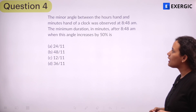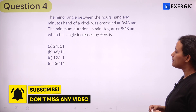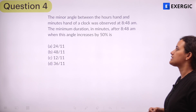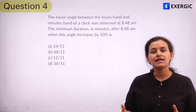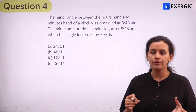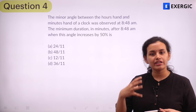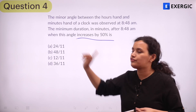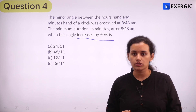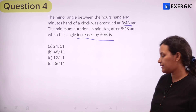The minor angle between the hour hand and minute hand of a clock was observed at 8:48 AM. The minimum duration in minutes after 8:48 AM when this angle increases by 50% is what? So the angle between the hour hand and minute hand at 8:48 has been given, and we need to find the time in which this angle is going to increase by 50%.